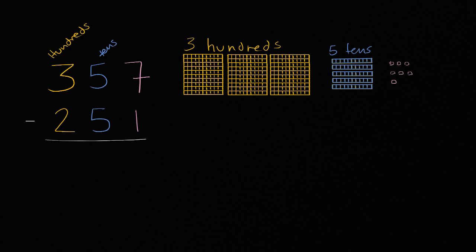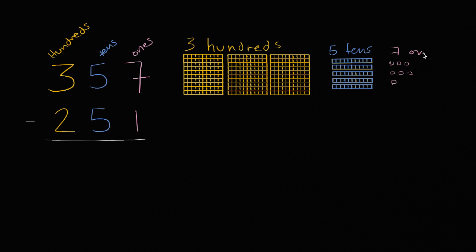And then last but not least, we have in the ones place, we have seven. So that represents seven ones — one, two, three, four, five, six, seven. Seven ones.